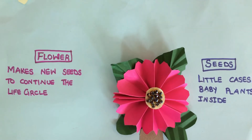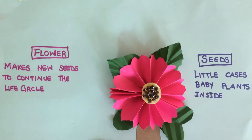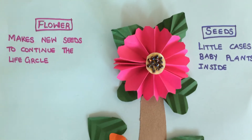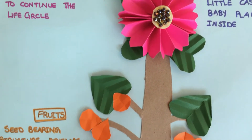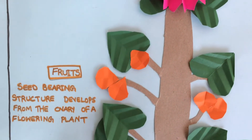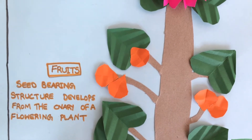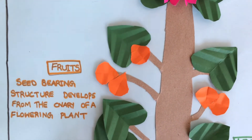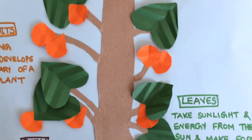Parts of a plant: Seeds — little cases with baby plants inside. Fruits.